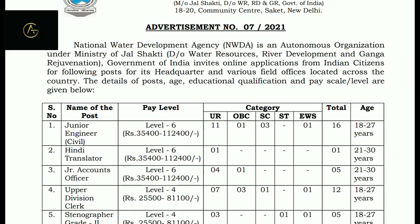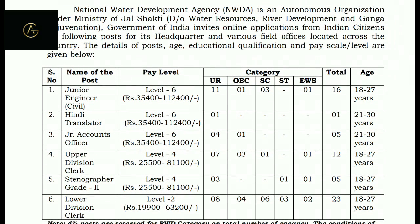Next is Hindi Translator, level 6, pay 35,400. Only one post available, age limit 21 to 30 years. Next is Junior Account Officer, level 6 pay, same level, total five posts, same age limit 21 to 30.